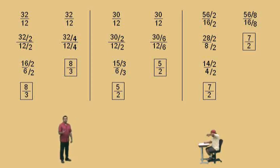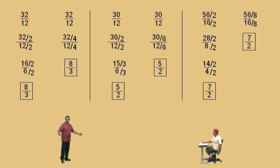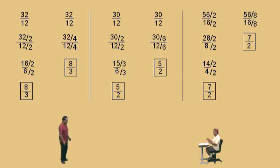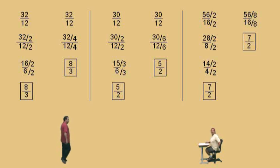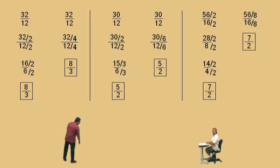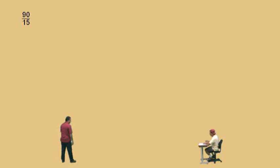So remember, you're supposed to be doing these problems without a calculator. This is how you learn your times tables. If you're doing this with a calculator, you won't learn anything but how to push buttons. So try these problems without a calculator, and then check your answers with your calculator. Alright Charlie, here we go: 90 over 15. What number divides evenly into 90 and 15?